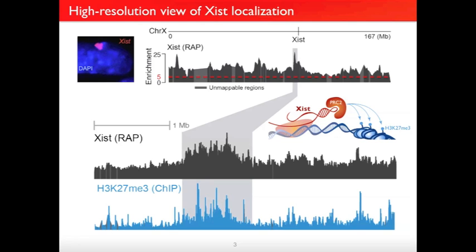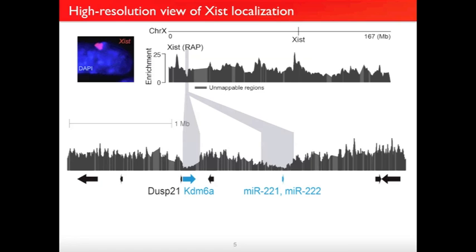We first looked at a few of the highly enriched XIST regions and found that these regions are also enriched for the H3K27 trimethylation histone mark. H3K27me3 correlates with XIST occupancy across the entire chromosome, which makes a lot of sense because XIST is known to interact with Polycomb Repressive Complex II, which writes this histone modification. When we looked at regions of the chromosome with particularly low XIST enrichment, we found these almost invariably contain genes known to escape X chromosome inactivation — genes expressed from both the active and inactive X — and in some cases there's a very sharp boundary between escape genes and silenced genes.